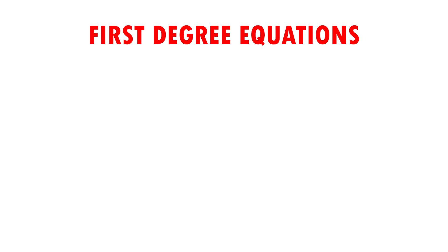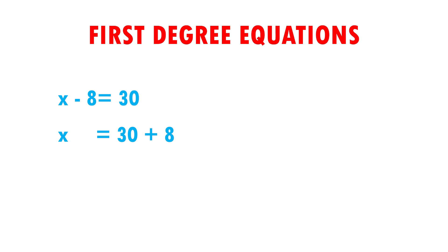Let's see another example. Here I have x minus 8 is equal to 30. Since I want to know how much x is worth, I have to clear it, so I have to leave it alone. I have that x is equal to 30. The negative 8 that is subtracting passes to the other side of the equal sign. When we pass a number to the other side of the equal sign, it has to pass doing the opposite. In this case, it is subtracting, so it passes adding. And I have that x is equal to 30 plus 8. Therefore, x is equal to 38. To know if my result is correct, I have to substitute.